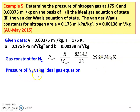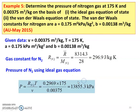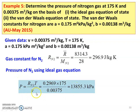Now the pressure of nitrogen using the ideal gas equation: PV equal to MRT, so P equals RT divided by V (specific volume). R is the gas constant for nitrogen, T is temperature in Kelvin, and V is specific volume. Substituting 0.2969 kilojoules per kilogram Kelvin into 175 divided by 0.00375 gives 13,855.3 kilopascal. So using the ideal gas equation, pressure is 13,855.3 kilopascal.